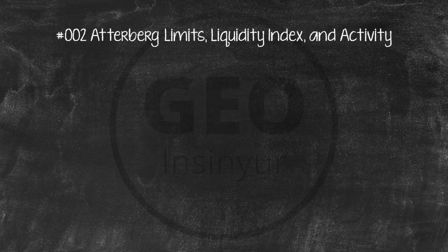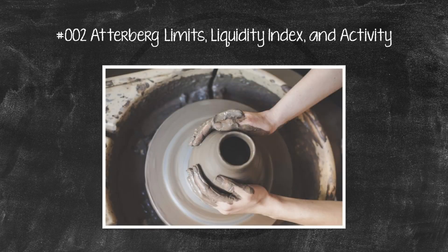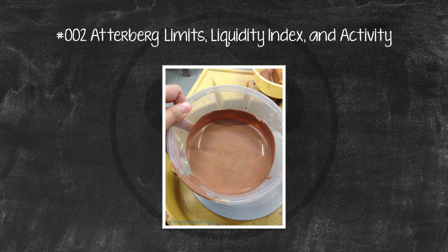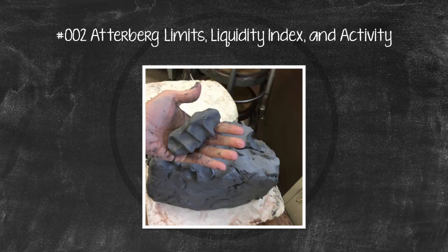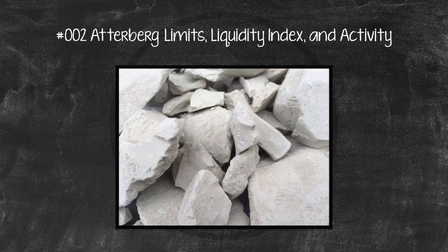The presence of clay minerals in a fine-grained soil will allow it to be remolded in the presence of some moisture without crumbling. If a clay slurry is dried, the moisture content will gradually decrease, and the slurry will pass from a liquid state to a plastic state. With further drying, it will change to a semi-solid state, and finally to a solid state, as shown in this figure.